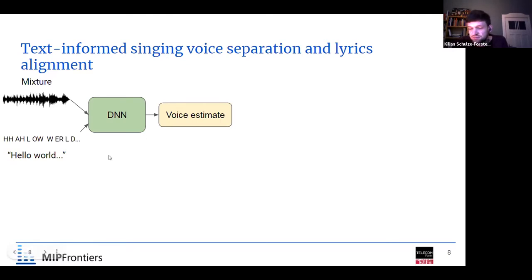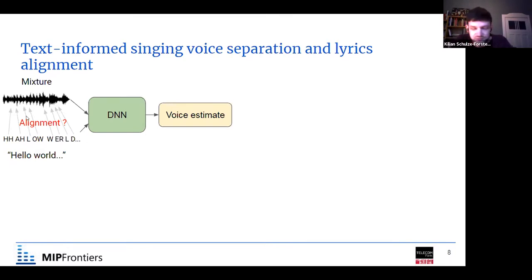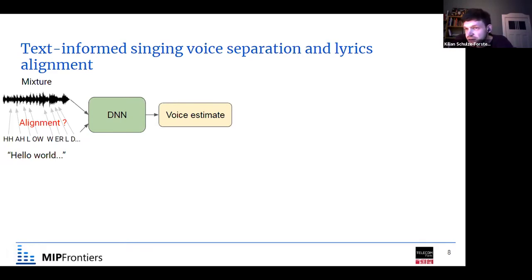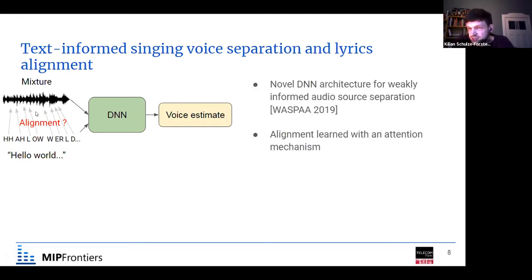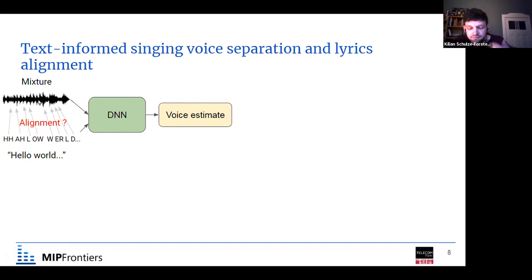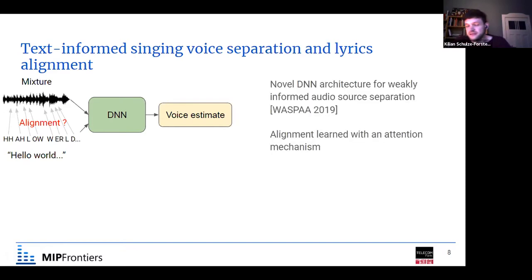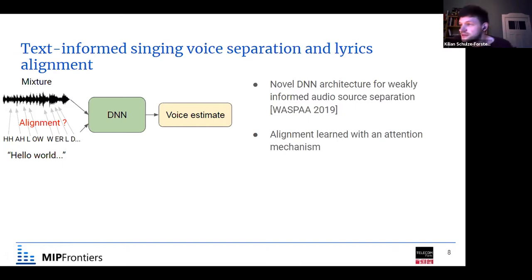To use phonemes for source separation, we have a small problem: we don't know when in our audio signal which phoneme is pronounced. We know they will be pronounced in some order, but we don't know exactly where. This is a problem called automatic lyrics alignment. When I started my PhD, there was no method that could, with enough reliability, align phonemes on singing voice mixed with other instruments. So as a first contribution, we developed a new deep neural network architecture for what we call weakly informed audio source separation.